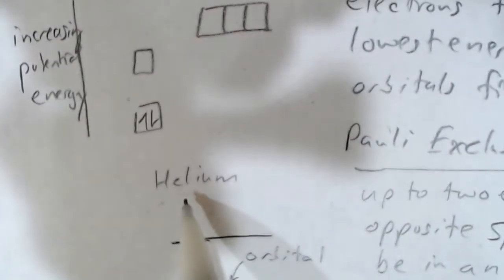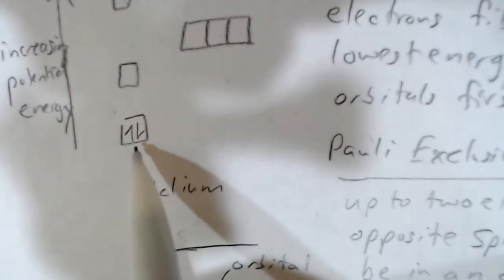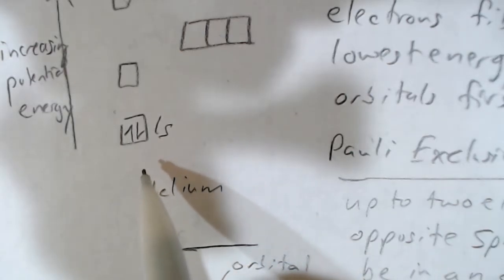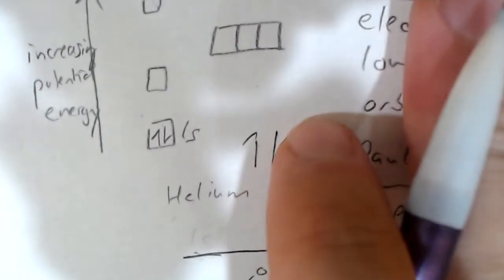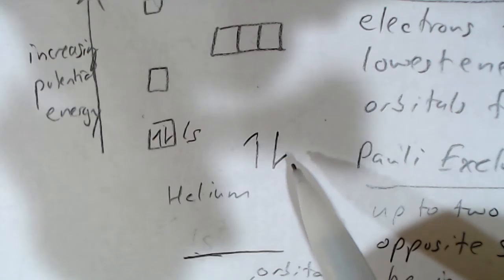What if we had helium? Its atomic number is 2, and so it would have 2 electrons. Those would both go into this 1s subshell. They would go into the lowest energy of all of these positions. These electrons would have opposite spins. One would be sort of up, and one would be down. We can show the spin using the up or down arrows.